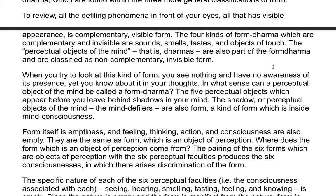When you try to locate this kind of form, you see nothing and have no awareness of its presence. Yet you know about it in your thoughts. In what sense can a perceptual object of the mind be called a form dharma? The five perceptual objects which appear before you leave behind shadows in your mind. The shadows of perceptual objects of the mind are also form — a kind of form which is inside mind consciousness. Form itself is emptiness, and feeling, thinking, action, and consciousness are also empty.